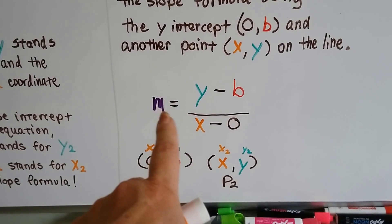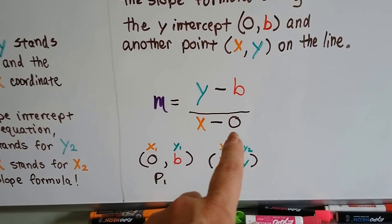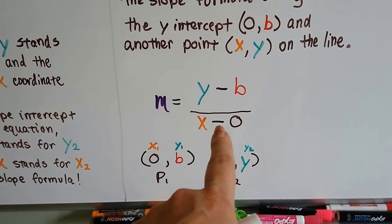So now we've got m, the slope of the line, is going to equal y minus b over x minus 0. Well, x minus 0 is still x, right? It's not going to change because of that 0.